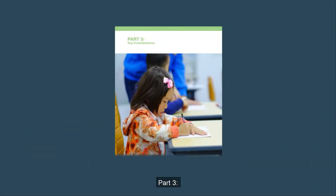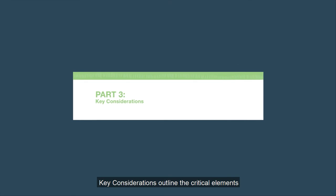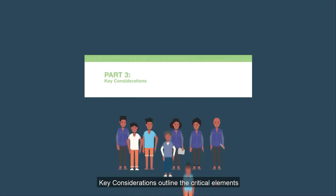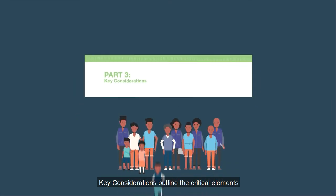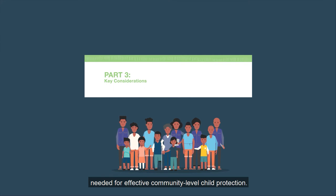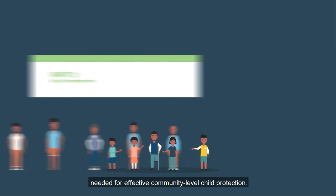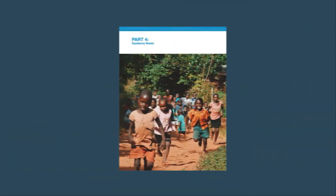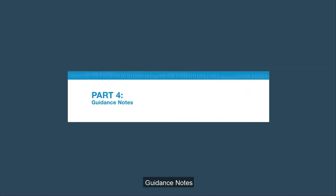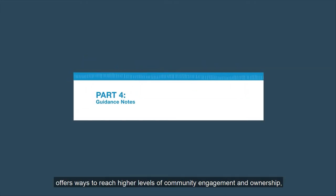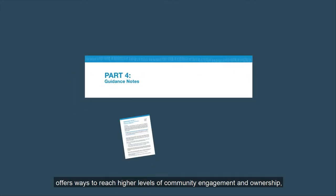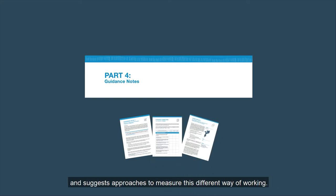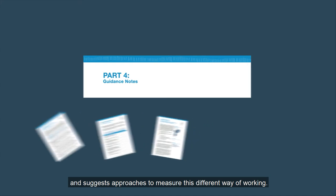Part 3, Key Considerations, outlines the critical elements needed for effective community-level child protection. Part 4, Guidance Notes, offers ways to reach higher levels of community engagement and ownership and suggests approaches to measure this different way of working.